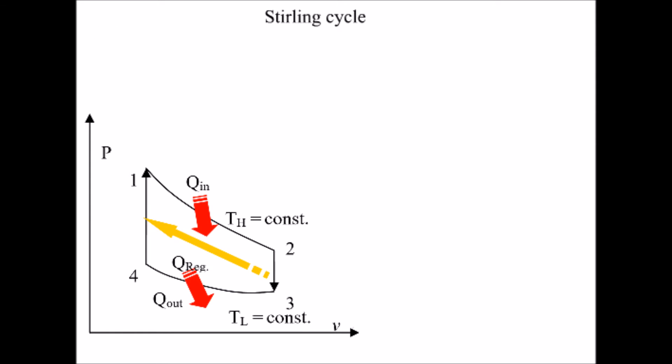In a Stirling cycle, Carnot cycle's compression and expansion isentropic processes are replaced by two constant volume regeneration processes.